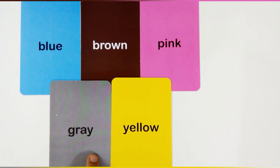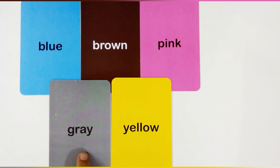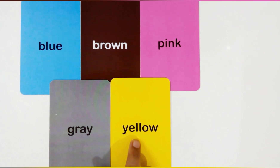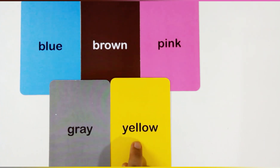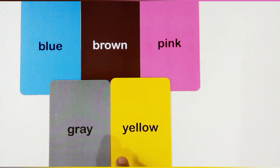G for gray. G-R-A-Y, gray. This is gray color. This is yellow color. Y for yellow. Y-E-L-L-O-W. This is yellow color.